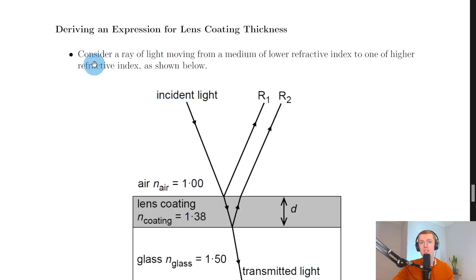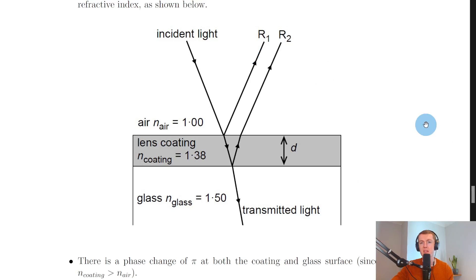So we're going to go on and derive an expression for lens coating thickness. It starts by saying consider a ray of light moving from a medium of lower refractive index to one of higher refractive index as shown below. So here we have a picture very similar to the one that we saw for thin films, but it is different in terms of what's happening, because this time we've got our air on the outside, then the lens coating, then glass.